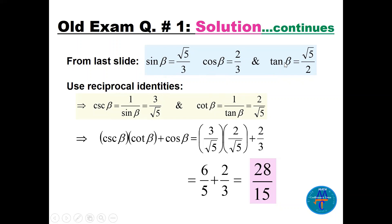Cotangent beta is the reciprocal of tan beta, so 2 over square root of 5. Let's put everything together: cosecant beta is 3 over square root of 5, cotangent beta is 2 over square root of 5, and cosine beta is 2 over 3. This gives 6 over 5 plus 2 over 3. The LCD is 15, so the answer is 28 over 15.